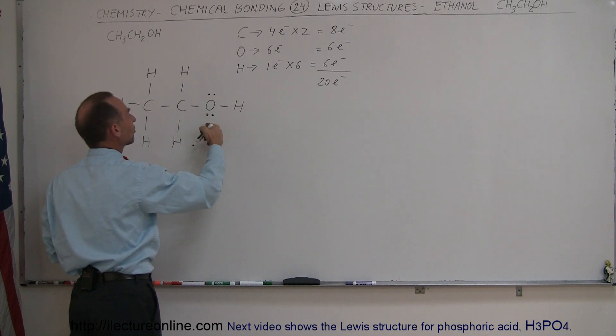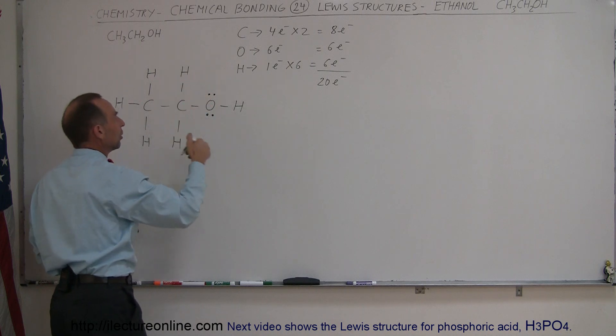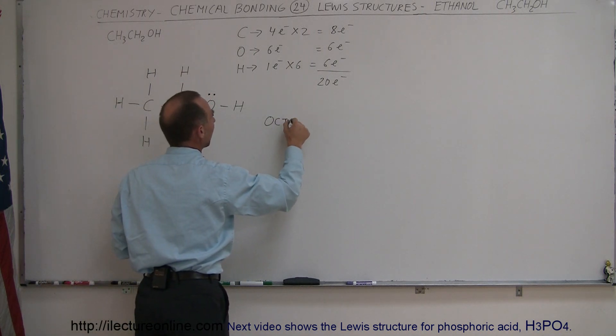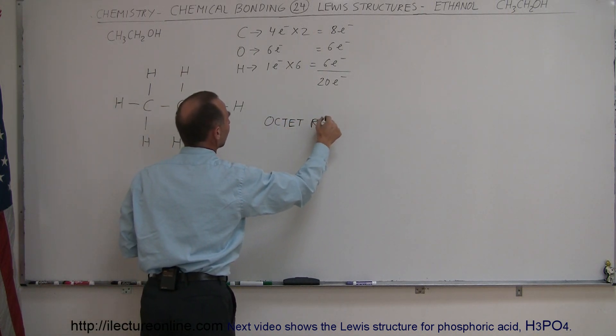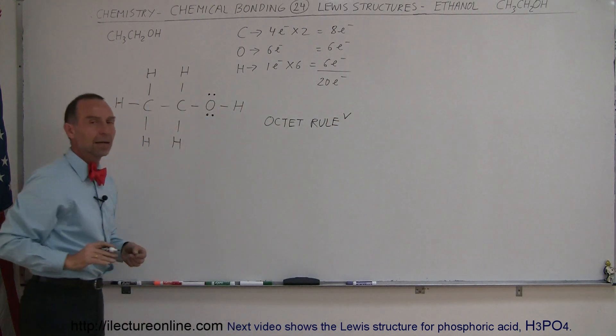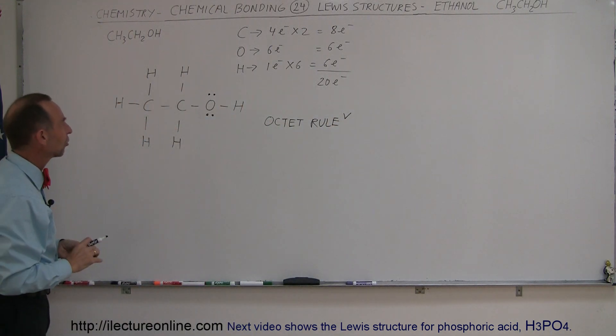Notice that now the oxygen has the octet rule followed, and each of the carbons has the octet rule followed. So the octet rule is now complete and satisfied for all of the atoms in this structure.